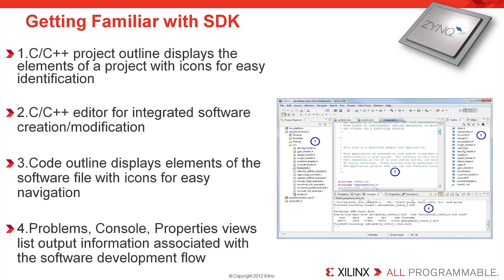So, a quick look into the actual SDK window — this is the main development window that the software engineer will be dealing with. On the far left-hand side, under the project explorer tab, is an outline which displays all of the elements of the project, and each one has an icon so you can quickly identify what type of files you're dealing with. The main window is an editor, closely coupled with diagnostic and error detection support. On the far right-hand side is a code outline, so if you want to jump quickly to a specific header file, function, or variable usage, you can do so in this window. In the bottom tab, there are problems, consoles, terminal windows, property view lists, and so forth.